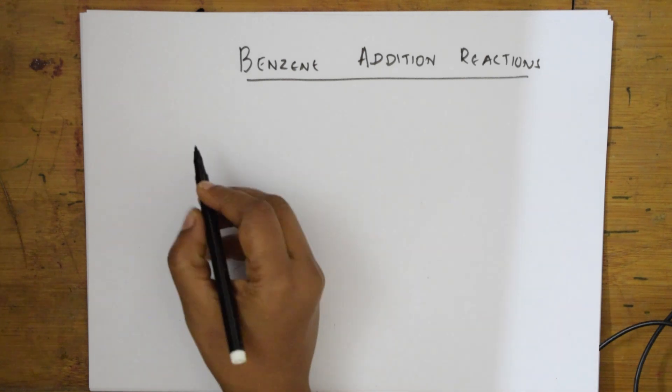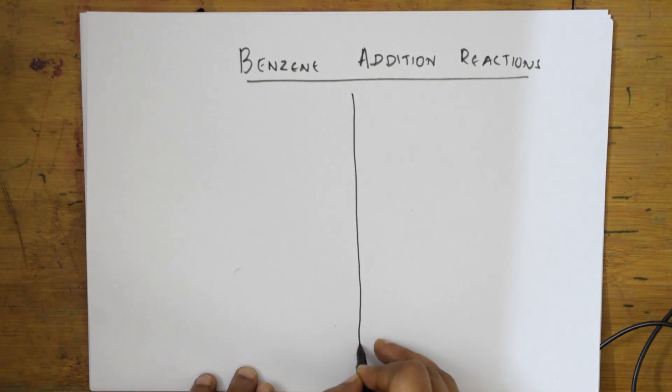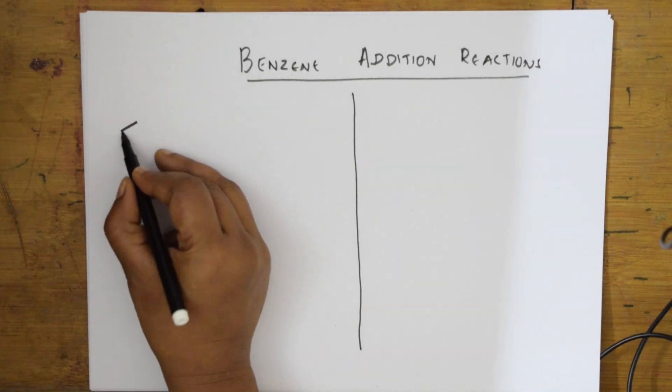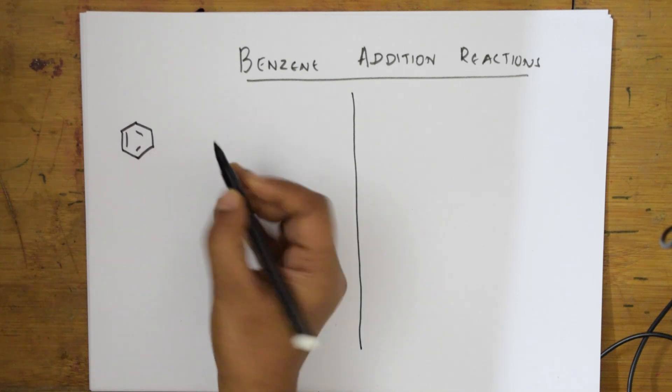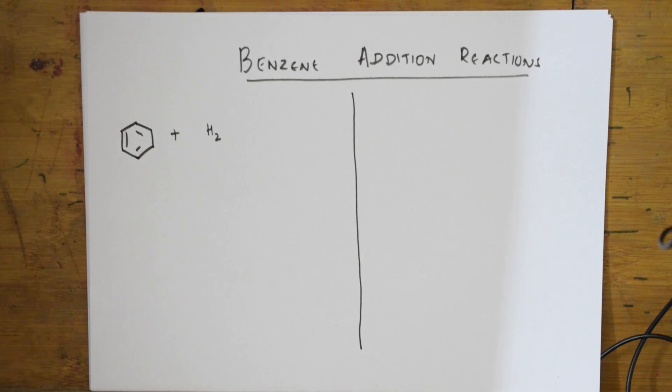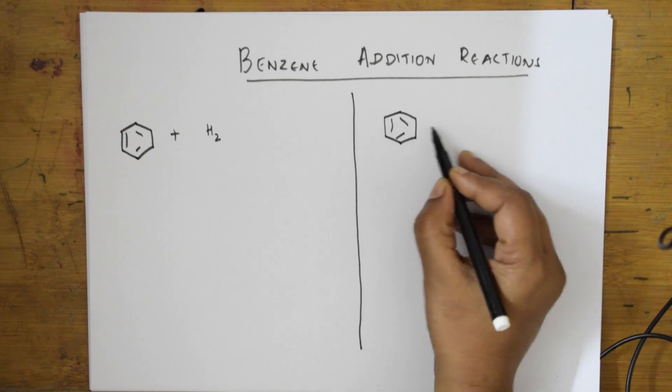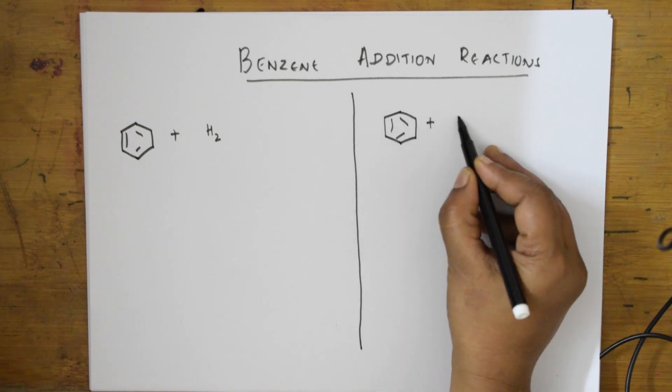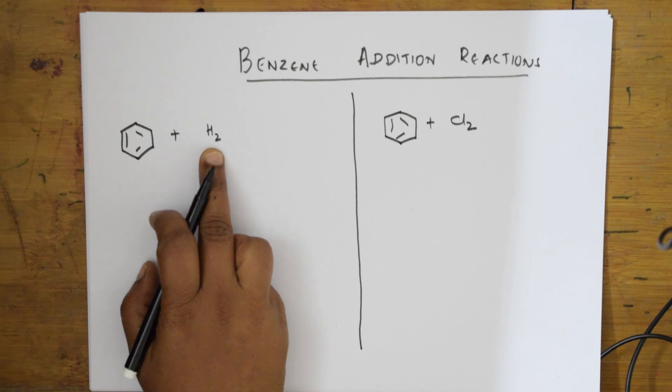Let us divide the page into two equal halves. Benzene, because of the presence of alternate pi bonds, if I try to add hydrogen this is a hydrogenation reaction. The same benzene I am going to allow to undergo chlorination, which is addition of chlorine.